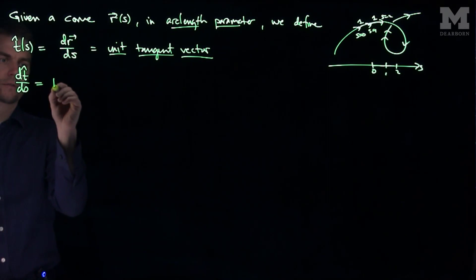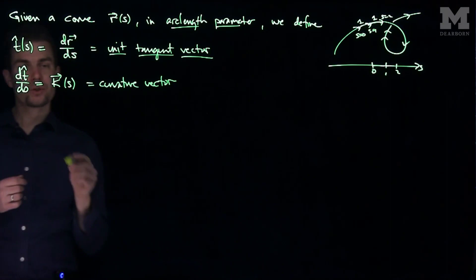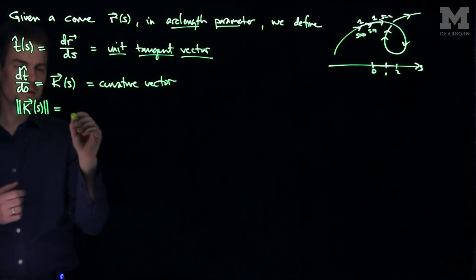Then the derivative of the unit tangent vector with respect to s is referred to as the curvature vector. So this is our curvature vector. The curvature vector is not necessarily a unit vector. So what we'll do is we'll say that the length of the curvature vector is called the scalar curvature.